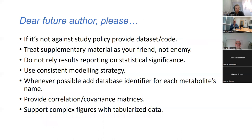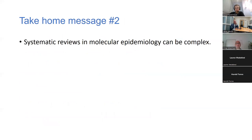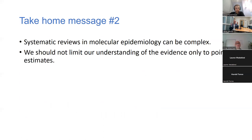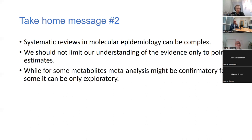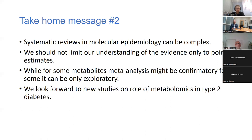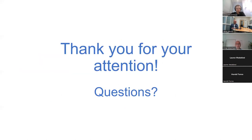Some notes for future researchers: please consider issues discussed in previous slides. Systematic reviews in molecular epidemiology can be complex — we cannot rely just on point estimates, but must understand what stands behind those numbers. For some metabolites, this method is confirmatory, but for many it remains exploratory and is not the end of the discussion. The results of this paper can inspire new studies and new investigations in existing studies. We look forward to doing more work on metabolomics and type 2 diabetes. Thank you for your attention, and I'm open to your questions.